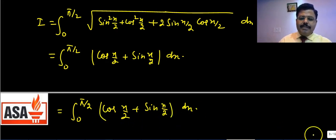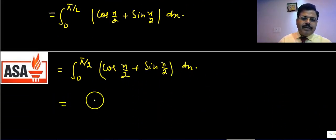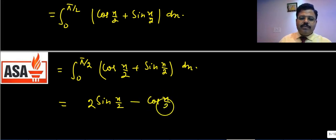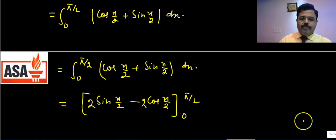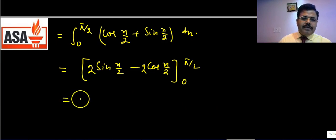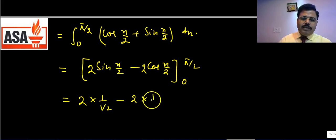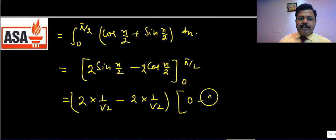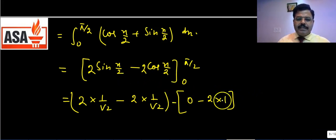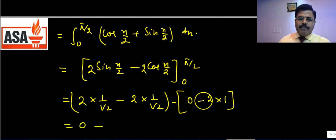On the interval 0 to π/2, both sin(x/2) and cos(x/2) are positive, so the modulus is simply cos(x/2) + sin(x/2). Integrating: [2·sin(x/2) − 2·cos(x/2)] from 0 to π/2. At x=π/2: 2·(1/√2) − 2·(1/√2) = 0. At x=0: 0 − 2·1 = −2. So the answer is 0 − (−2) = 2.